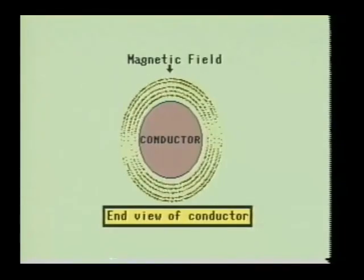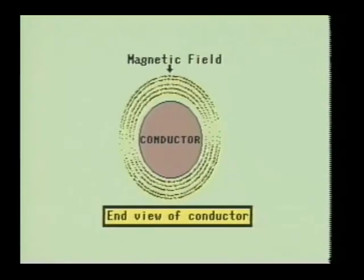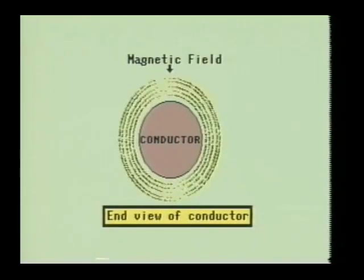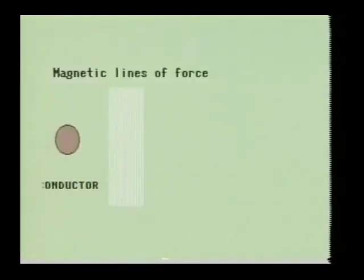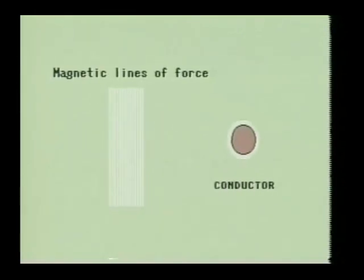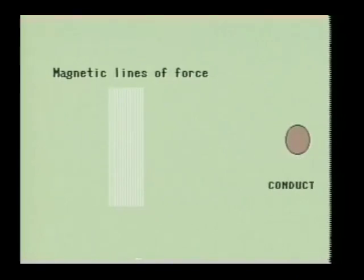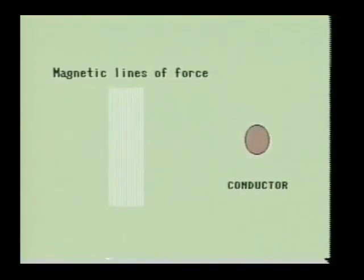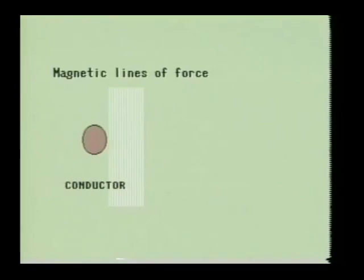When an electric current flows through a wire, it creates a magnetic field around the wire. This field is referred to as an electromagnetic field. Also, when a wire passes through a magnetic field, it induces a voltage into the wire. This is a very desirable effect of electricity. If it were not for this effect, electronics as we know it would not exist. It is this magnetic field that makes motors, transformers, coils, analog meters, and many other devices work in electronic circuits.